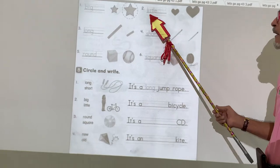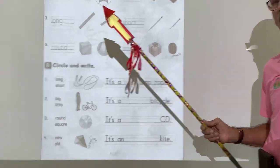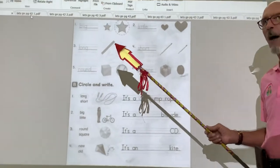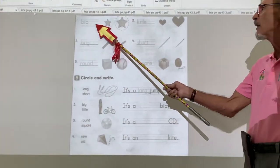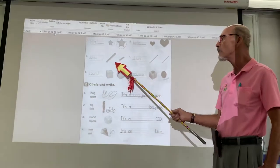Big. Little. Remember last week, we talked a little bit about opposites. Opposite words. This is big. This is little. Opposite. Long. Short.